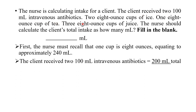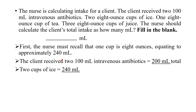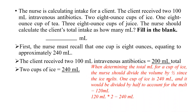First intake: 200 mL IV antibiotics (two 100 mL bags × 2 = 200 mL). Next, two 8-ounce cups of ice: one cup equals 240 mL, but when determining the mL of a cup of ice, divide the volume by half since ice melts. So one cup of ice = 120 mL; two cups of ice = 240 mL.